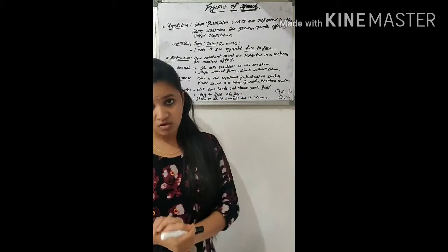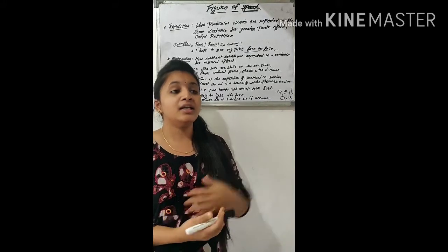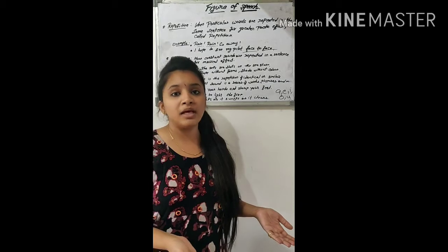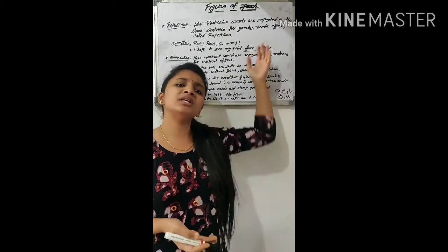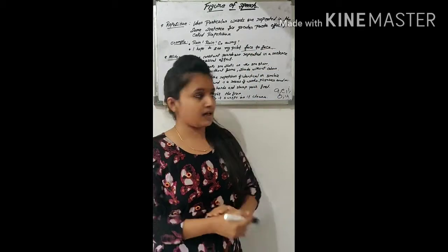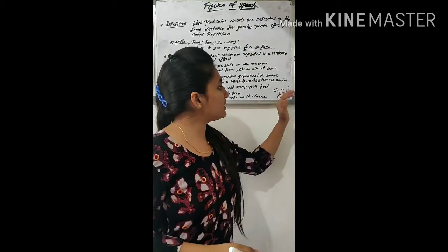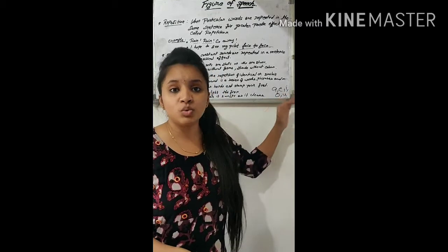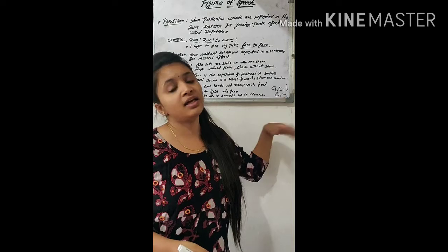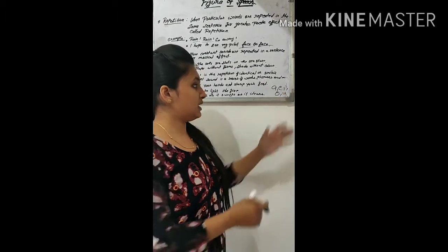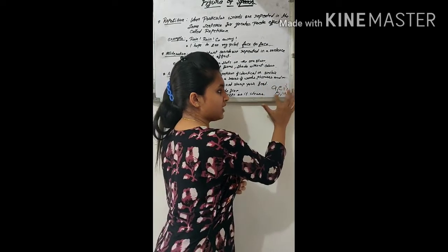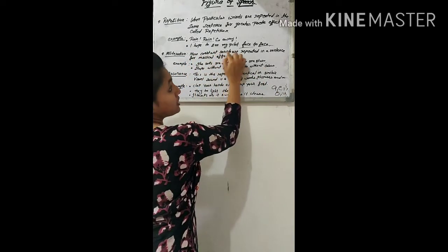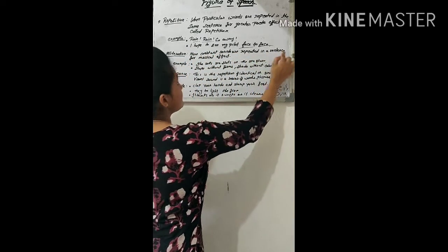What are vowels? A, E, I, O, U — all these are considered as vowels. And similarly, all letters other than these are called consonants. So just these two things we need to keep in mind: B, C, D, F, G — all these are considered consonants, and the five words A, E, I, O, U are vowels.